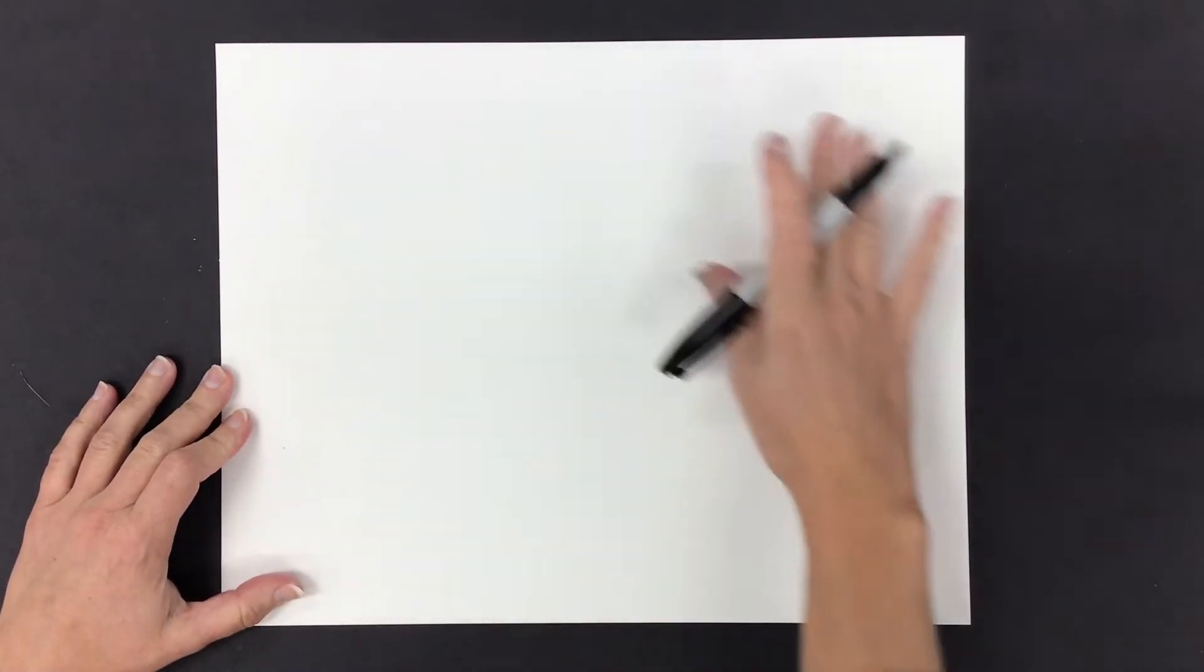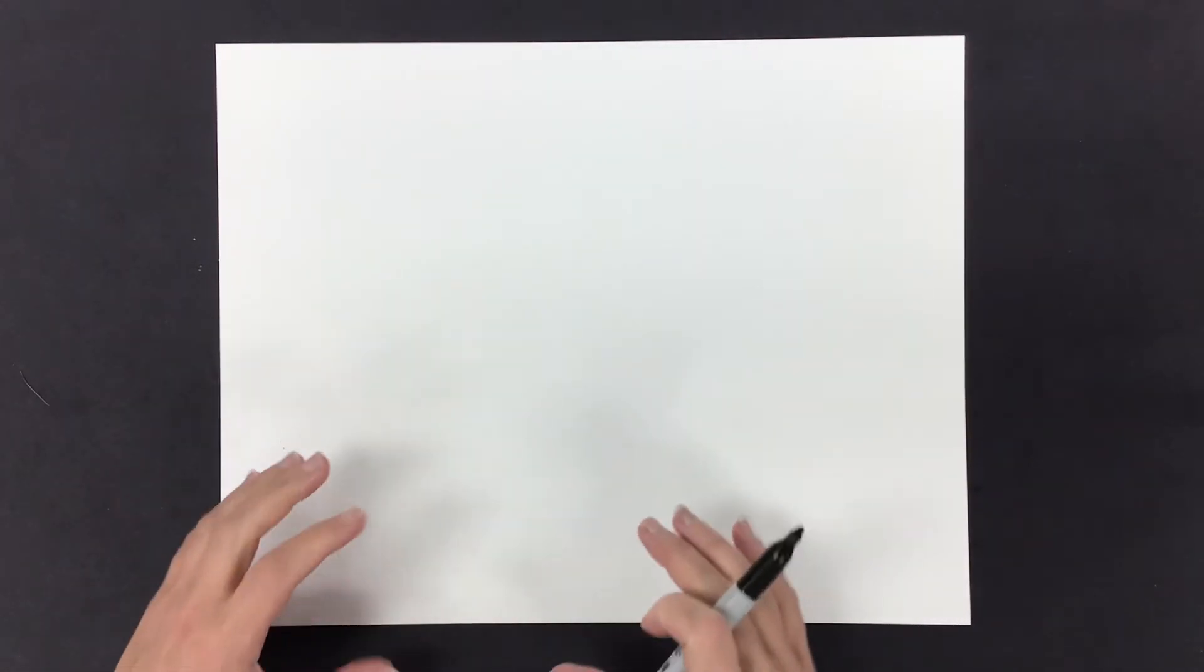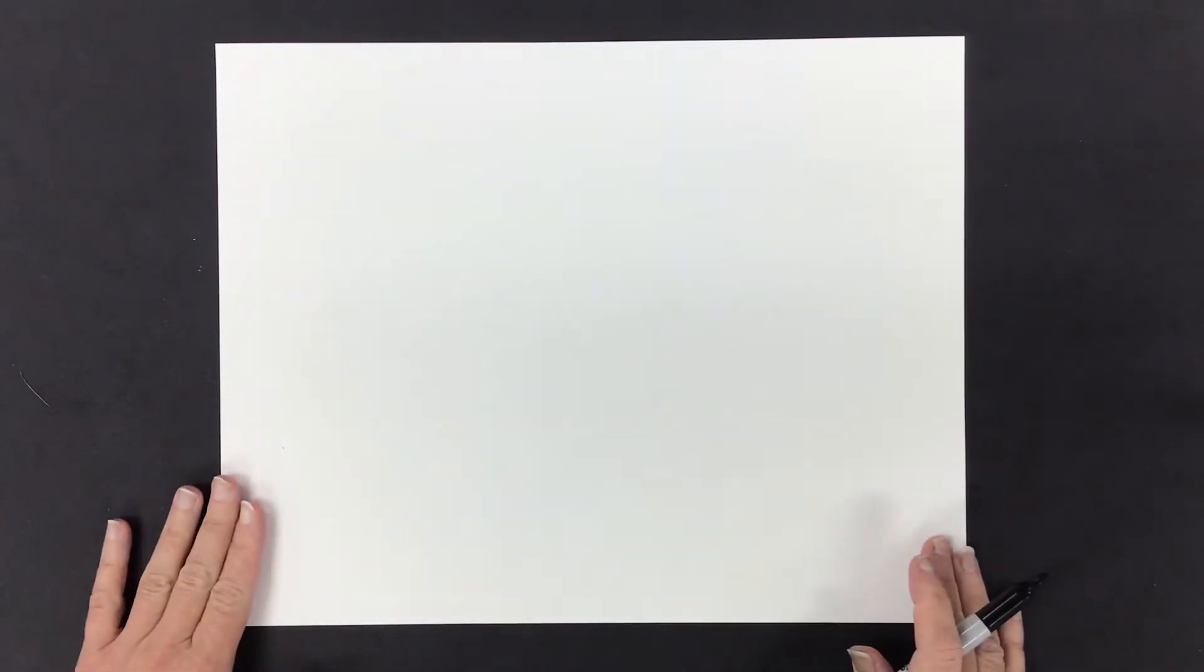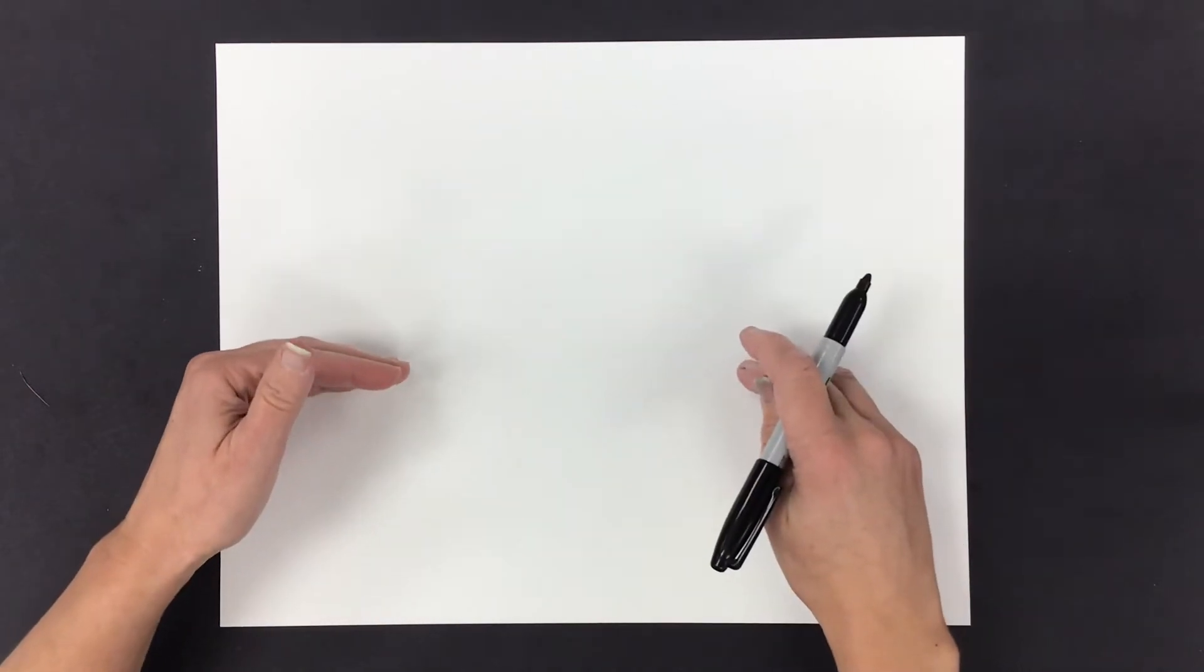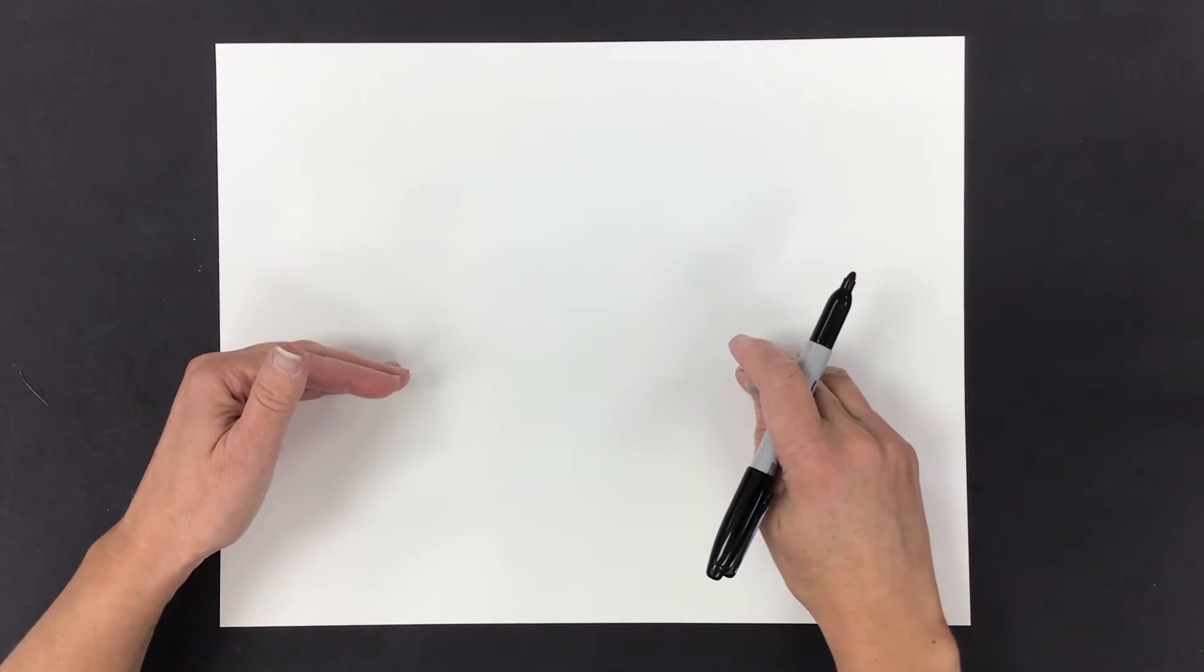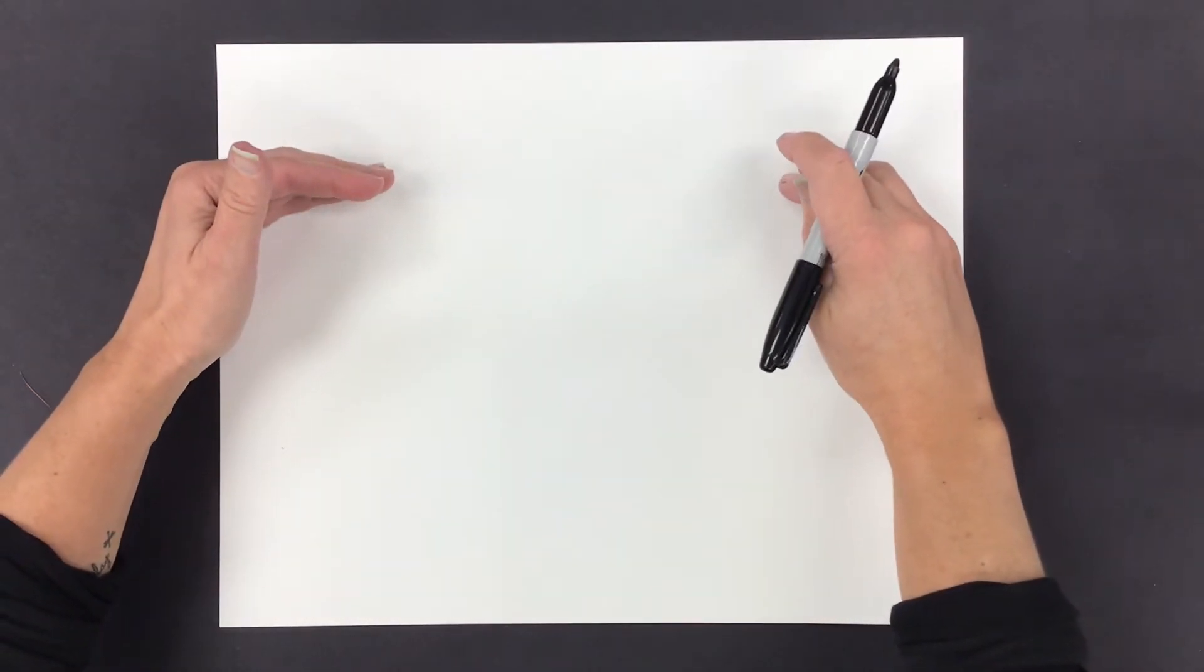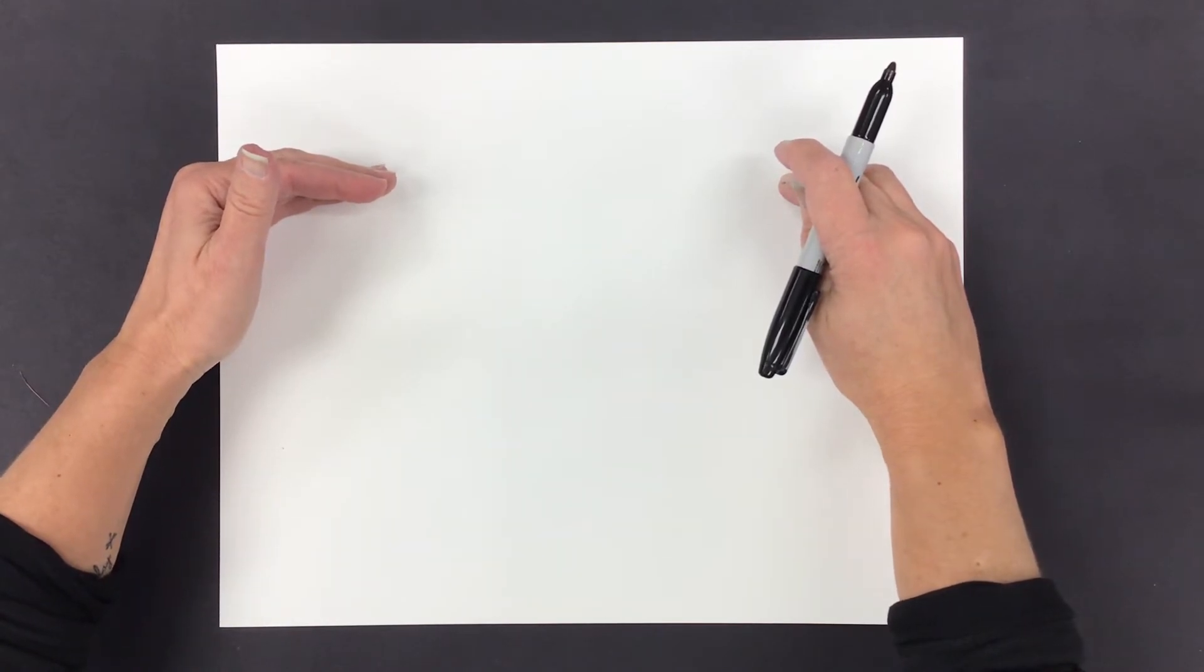When we make a landscape picture we think about the three sections of that picture. The area most close to us is lowest on the paper and that is called the foreground. Behind that a further distance away from us is the middle ground and the furthest back highest on the page way way away from us is the background.